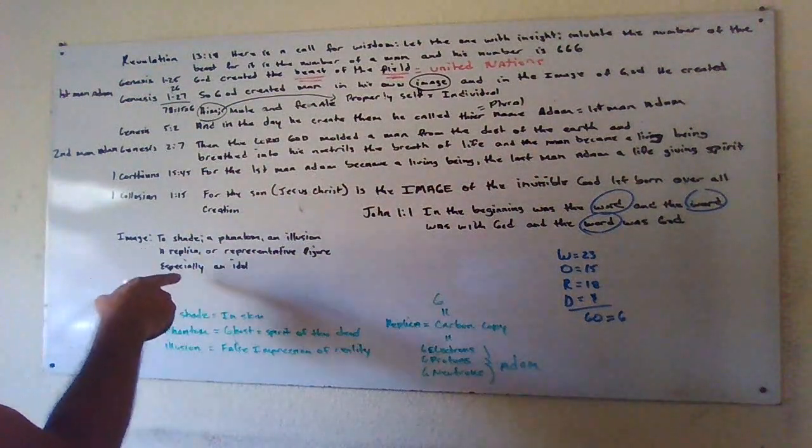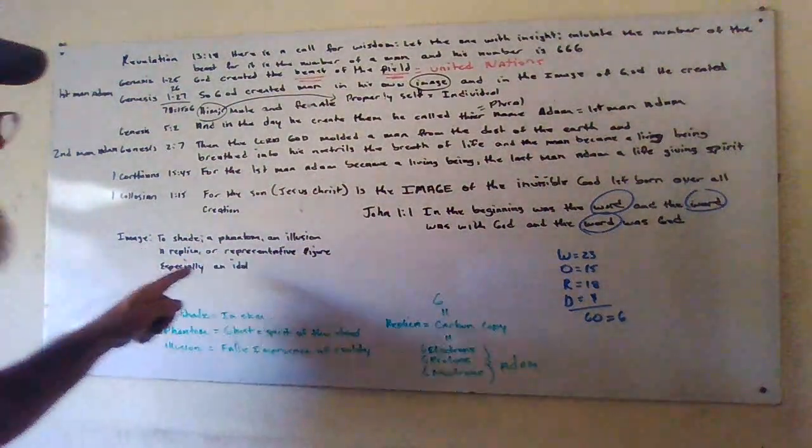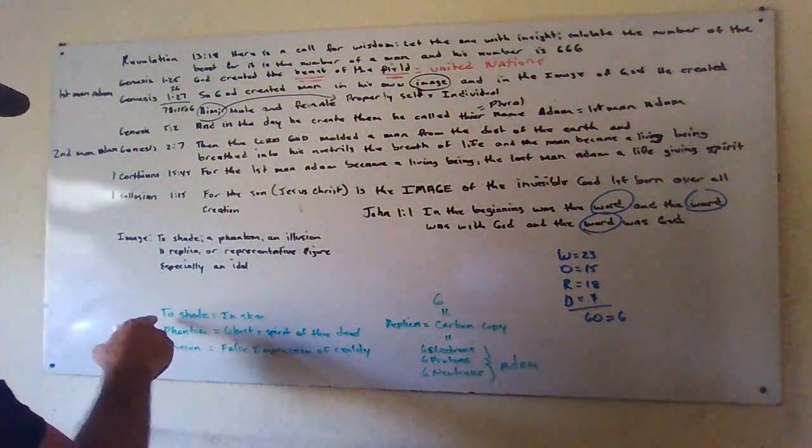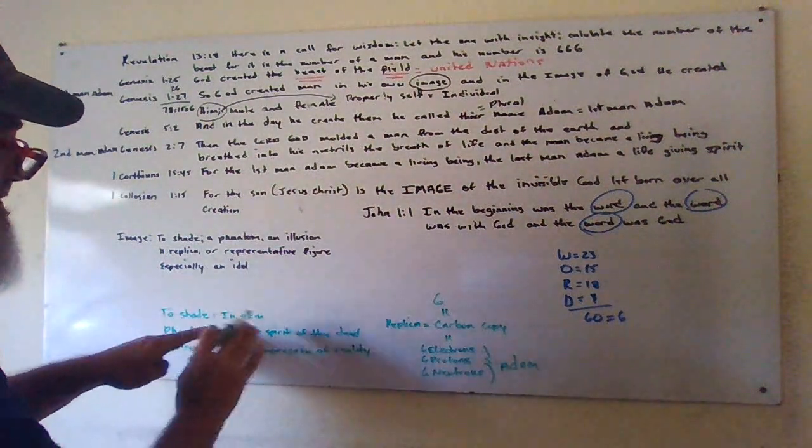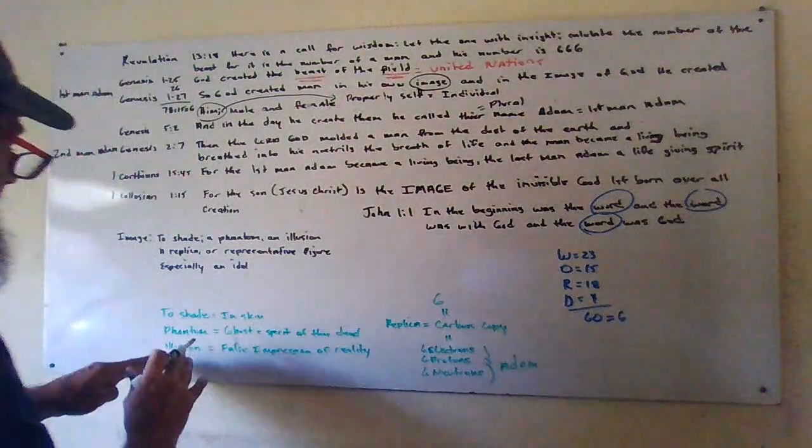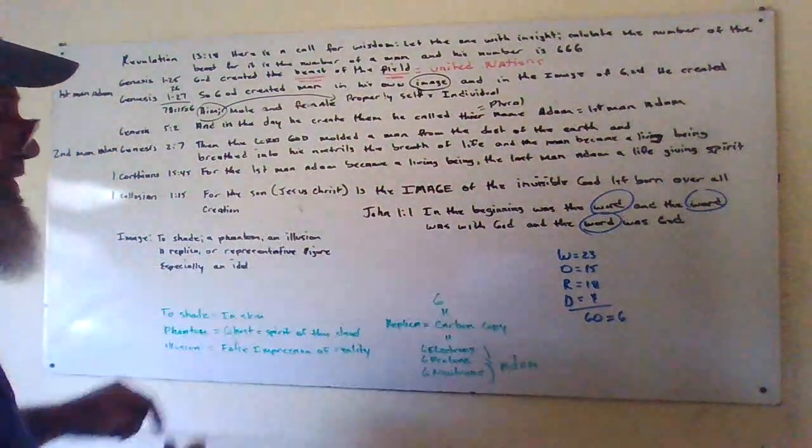It's an illusion. It's a replica or a representative figure, especially an idol. To shade means in skin, in our skin suits. A phantom is a ghost, which is the spirit of the dead. And an illusion is a false impression of reality.